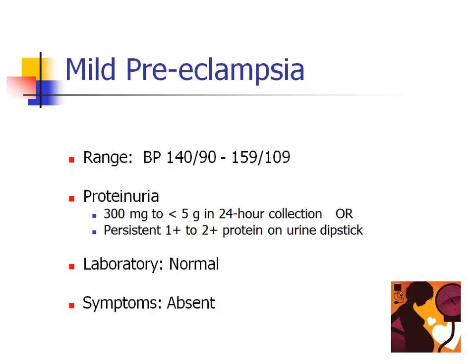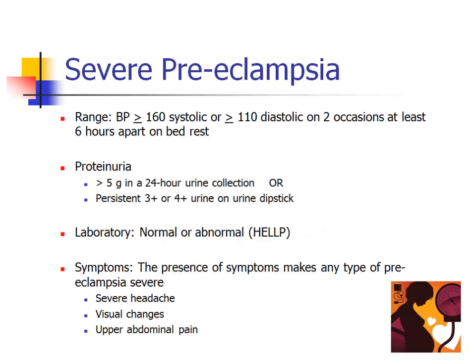The criteria for mild pre-eclampsia are listed here. Criteria for severe pre-eclampsia are also listed here. The patient only needs to have the presence of one of these findings to be diagnosed with severe pre-eclampsia. Abnormal laboratory findings or the presence of symptoms automatically makes a diagnosis of pre-eclampsia severe, even if blood pressure or proteinuria does not otherwise meet severe criteria.